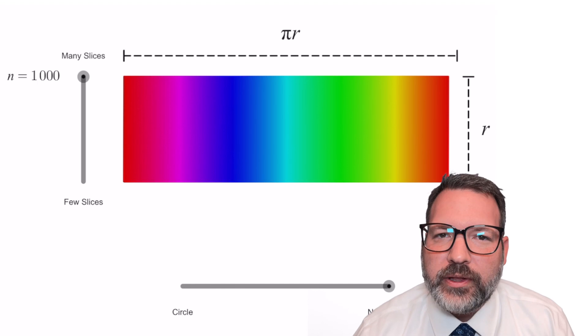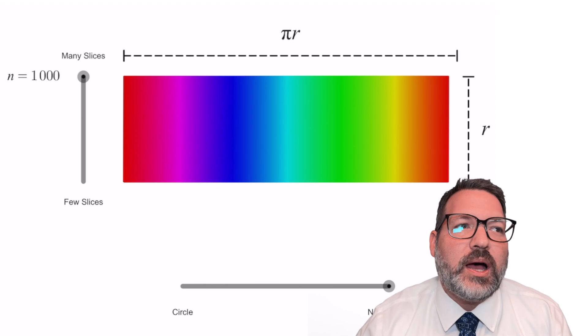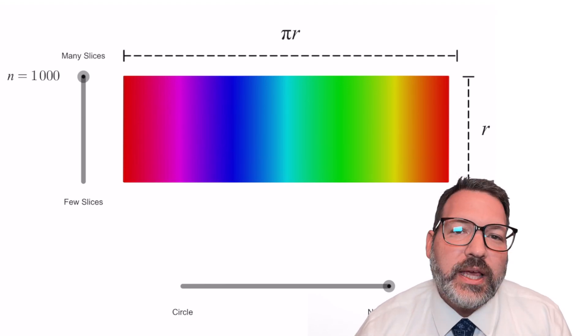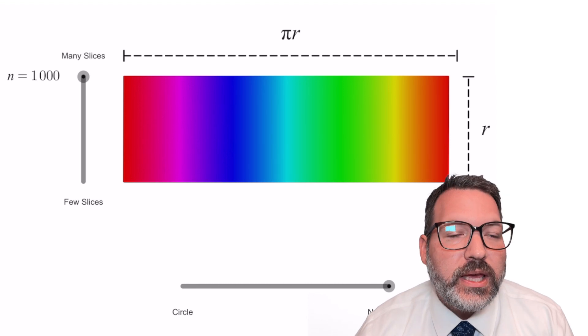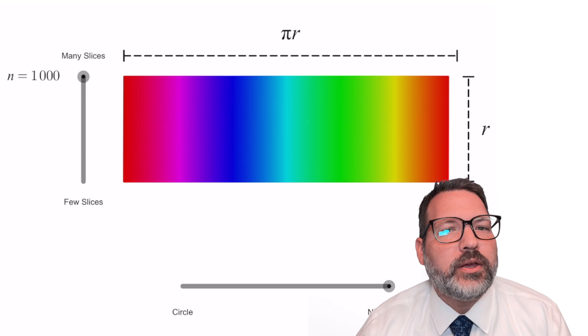This is where the tools of calculus come in. We don't need to stop at a thousand wedges of this circle. We don't even need to stop at a million or a billion wedges of this circle. We can imagine slicing up this circle into literally infinitely many tiny triangular wedges.